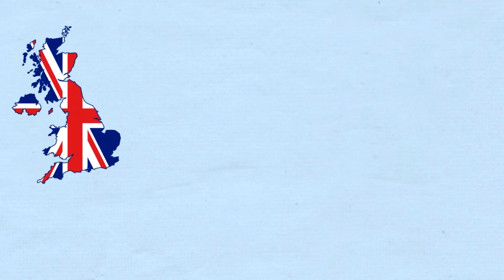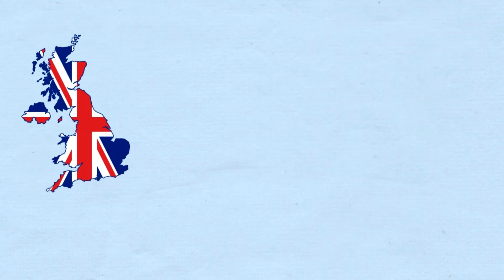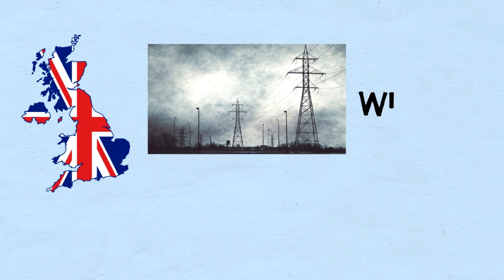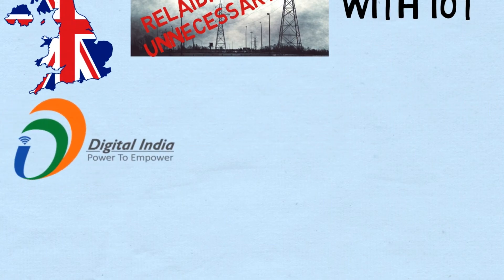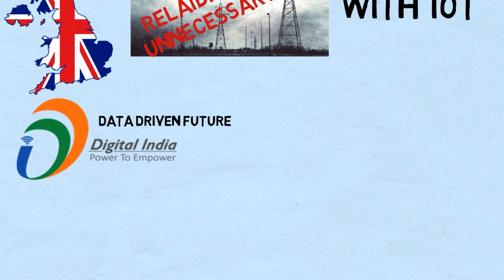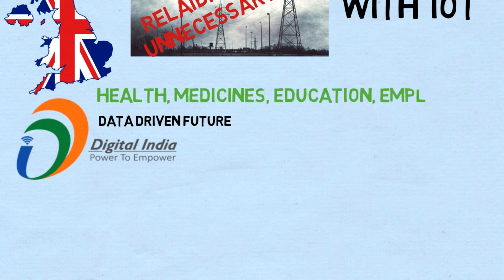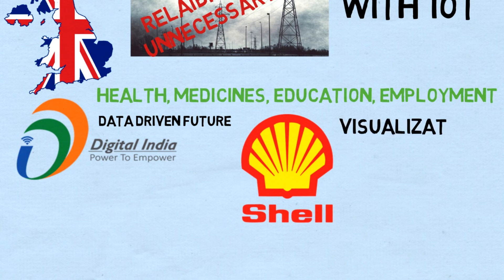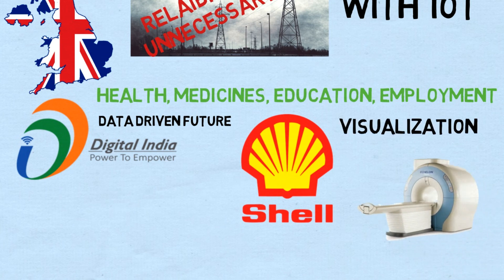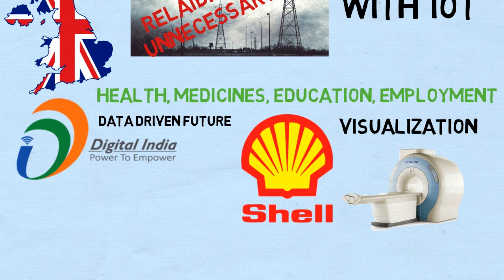The UK government has announced plans to integrate its power grid with IoT devices to improve the grid's reliability and cut down unnecessary costs. The Indian government has launched the Digital India Initiative to prepare the country for data-driven features, where IoT technology will be used to connect health, medicine, education, and employment services with people. Similarly, Shell, an oil and gas major, uses visualization techniques and MRI-like technology to track natural resources from their exact location.